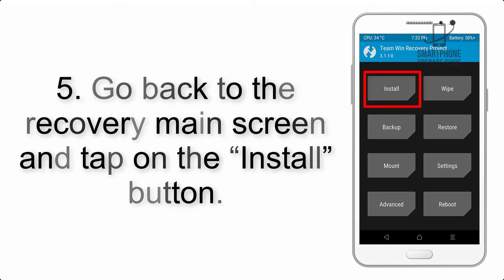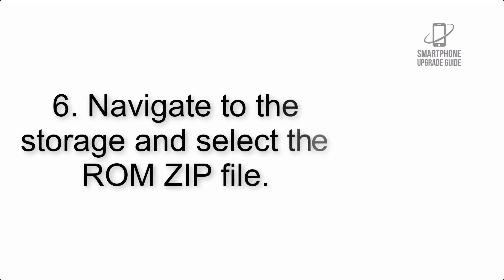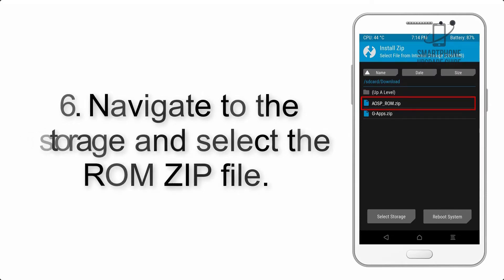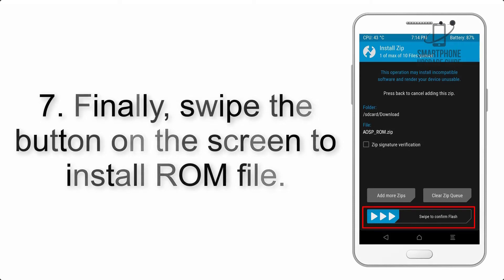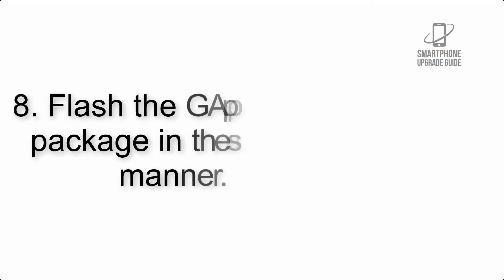Step 5: Go back to the recovery main screen and tap on the Install button. Step 6: Navigate to the storage and select the ROM zip file. Step 7: Finally, swipe the button on the screen to install the ROM file.